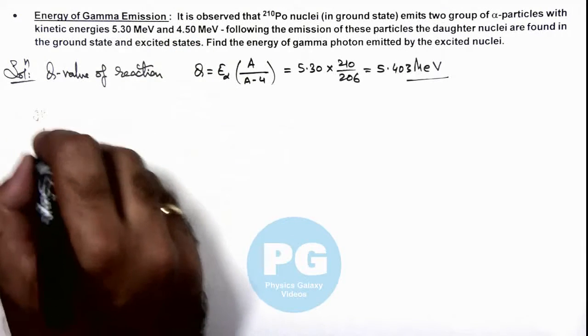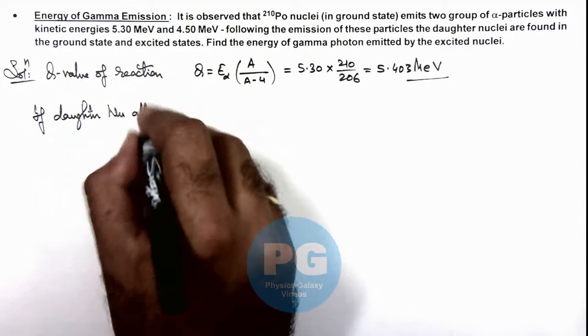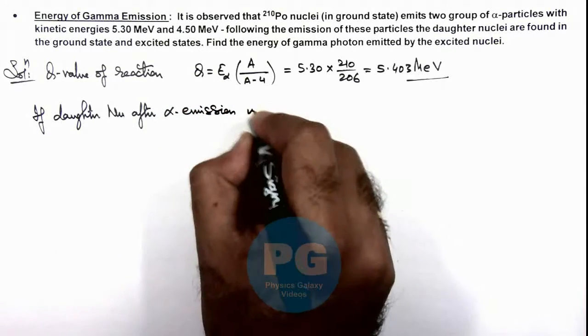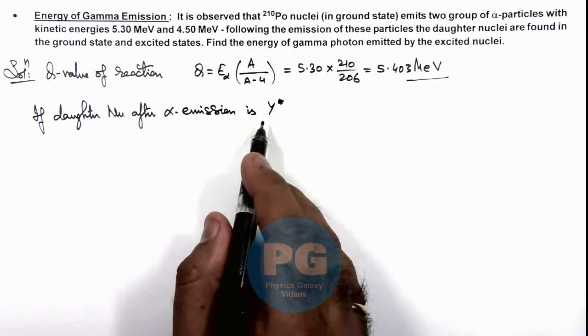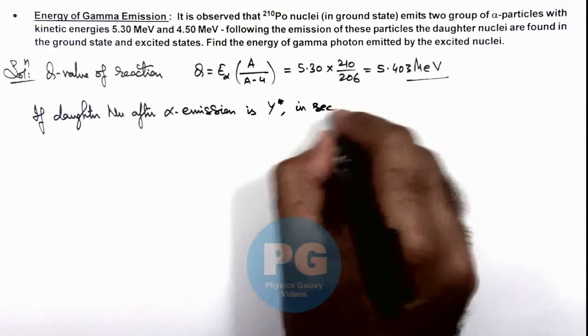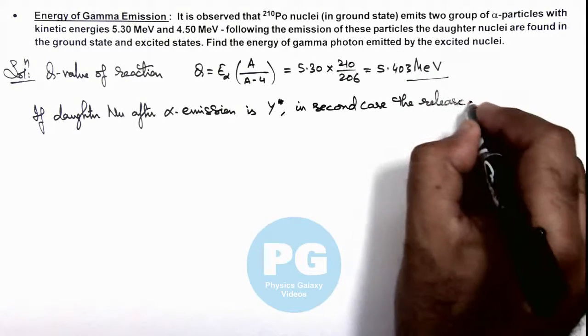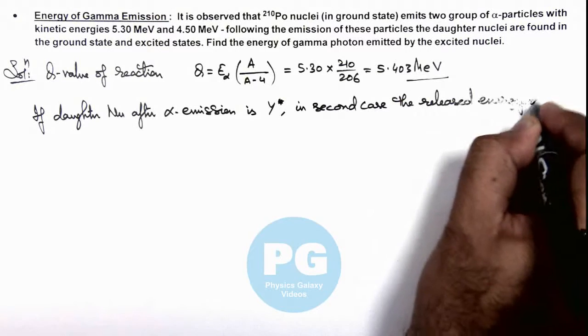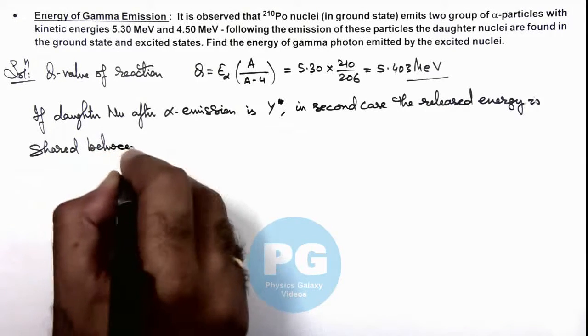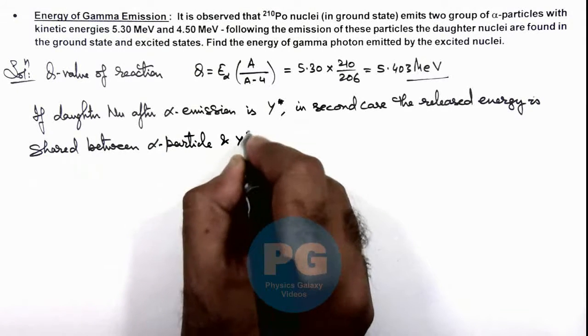If the daughter nucleus after alpha emission is Y*, which is the excited state of the nucleus, then in the second case, the released energy is shared between the alpha particle and the excited daughter nucleus.